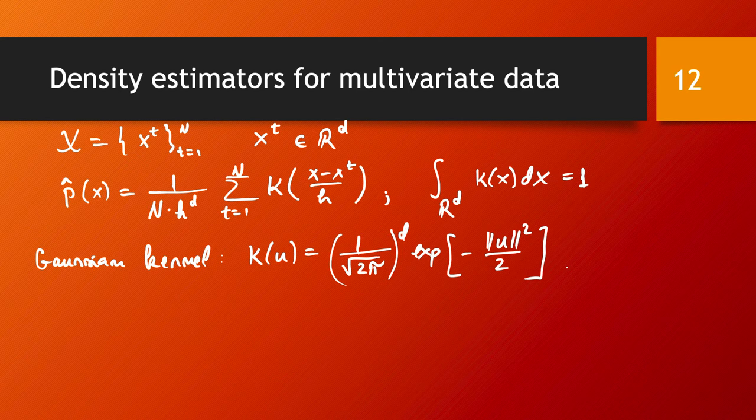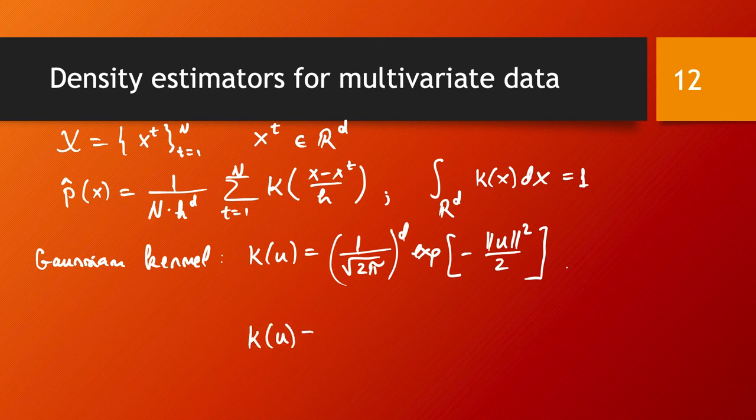It still has the disadvantage that it doesn't take the correlations into account. And if you are in such a case where the correlations are indeed important and non-zero, then it may be that you could use a different form of the Gaussian kernel where instead of the Euclidean distance you are using something else.